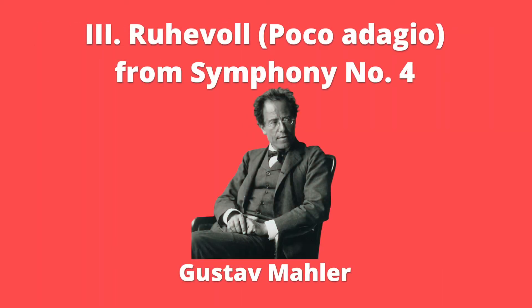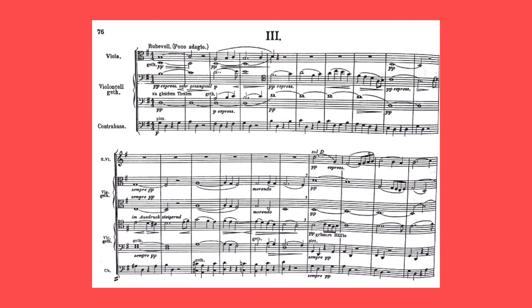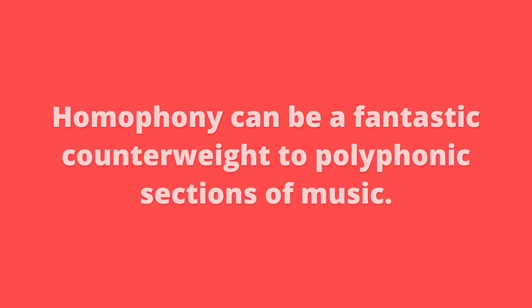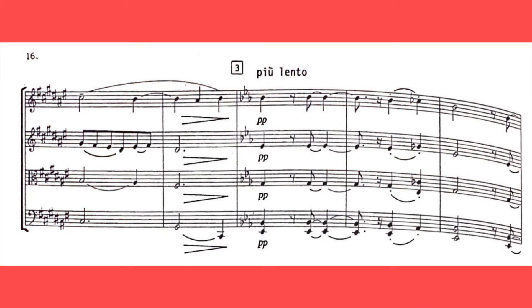Gustav Mahler also uses this accompanimental method of propulsion in the third movement of his Symphony No. 4. The melody is extremely slow paced, but the pizzicato low strings keep it alive. So does all of this mean that homophony should never happen in slow music? Should the lines never move together? Well actually, homophony can be a really great tool in slow music. It can be used to comfortably contrast extended sections of polyphony and rhythmic counterpoint, as in this example again from Walker's Lyric for Strings. This moment at rehearsal 3 comes after around a minute and a half of polyphonic music and offers a wonderful moment of emotional pause before continuing to the next section of rhythmic counterpoint.